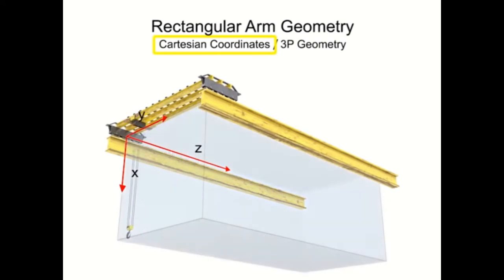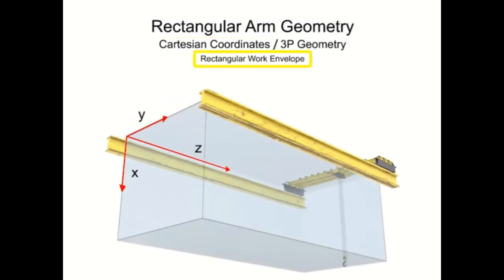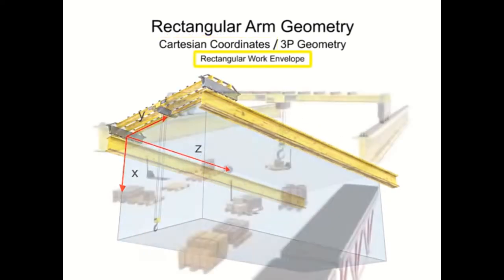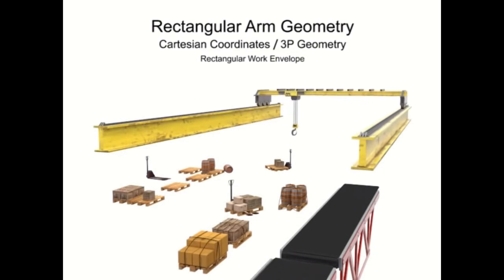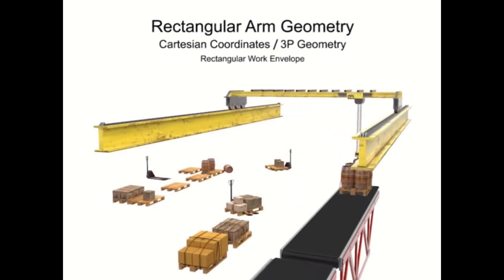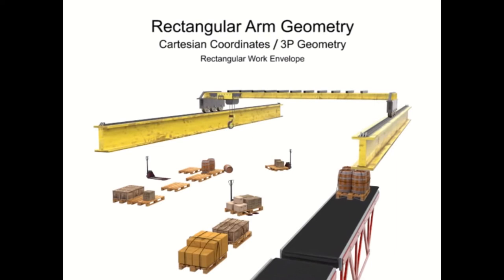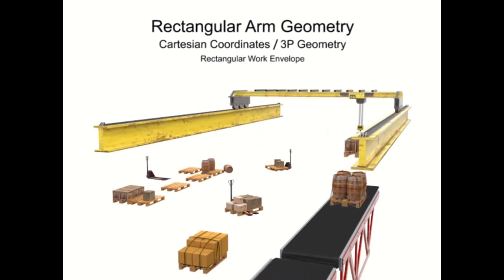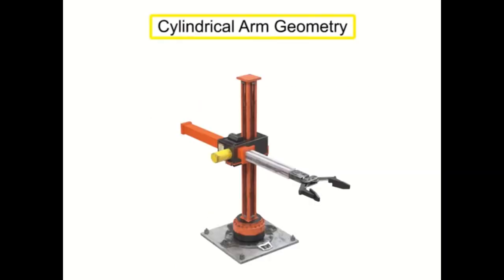That's why it's referred to as the Cartesian coordinate robot. As you can see from the motion of the end effector, it draws a rectangular work envelope, and that's why it's excellent for a crane in a very big factory where it can pick and place, and it's also very reliable.